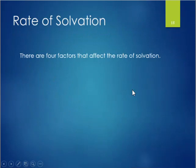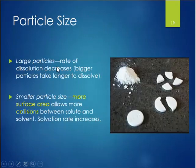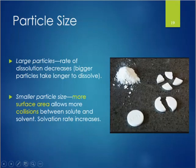There are four factors that affect the rate of solvation: particle size, stirring, temperature, and the amount of solute already dissolved. Regarding particle size: the larger the particle, the longer it takes to dissolve. Consider a tablet whole versus broken in half, in quarters, or crushed — the powder dissolves fastest. Smaller particle size means more surface area exposed, allowing more collisions between solute and solvent, thereby increasing the solvation rate.